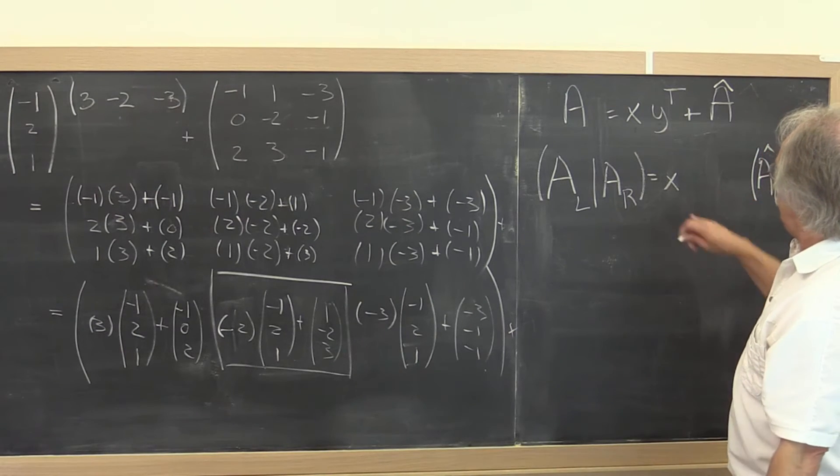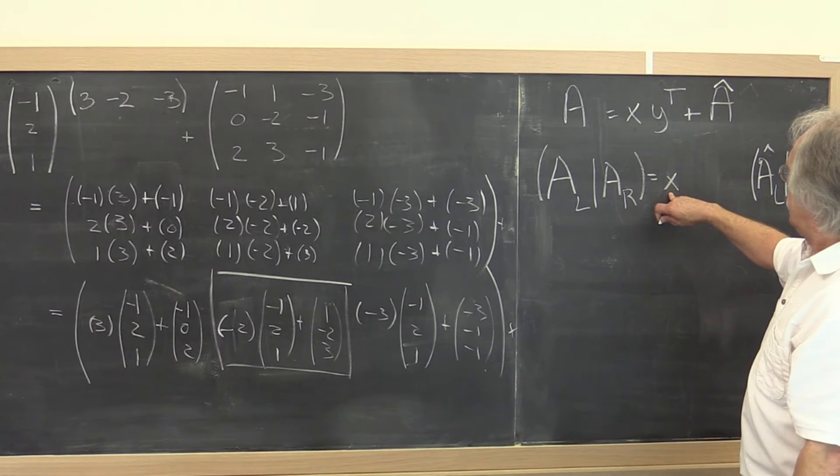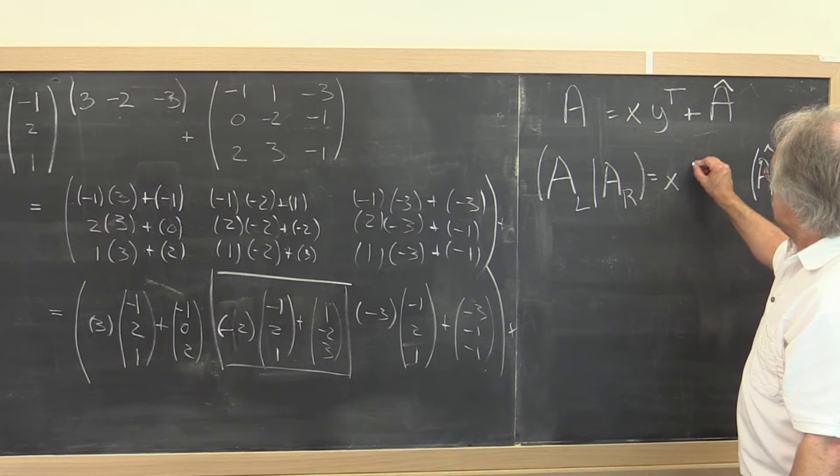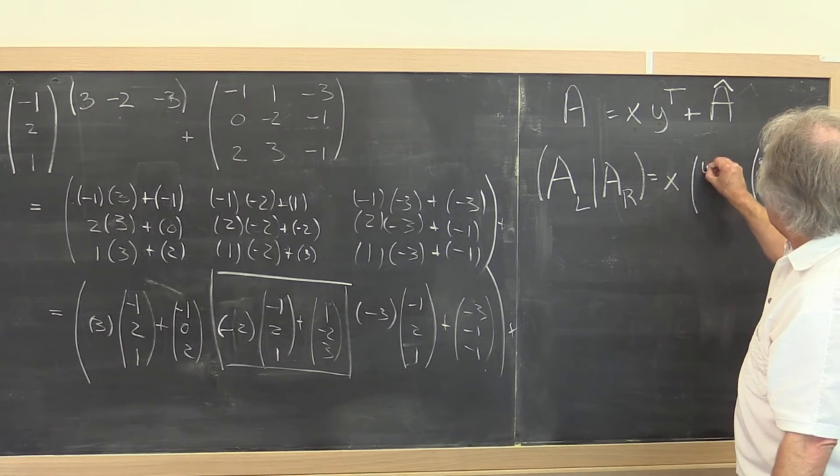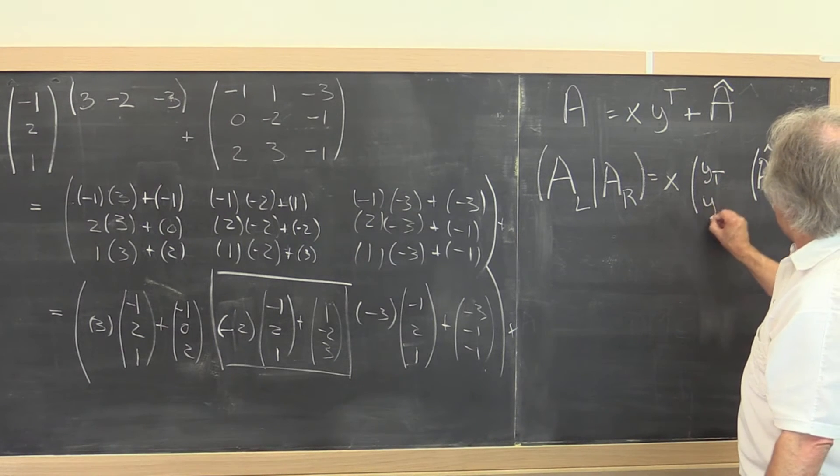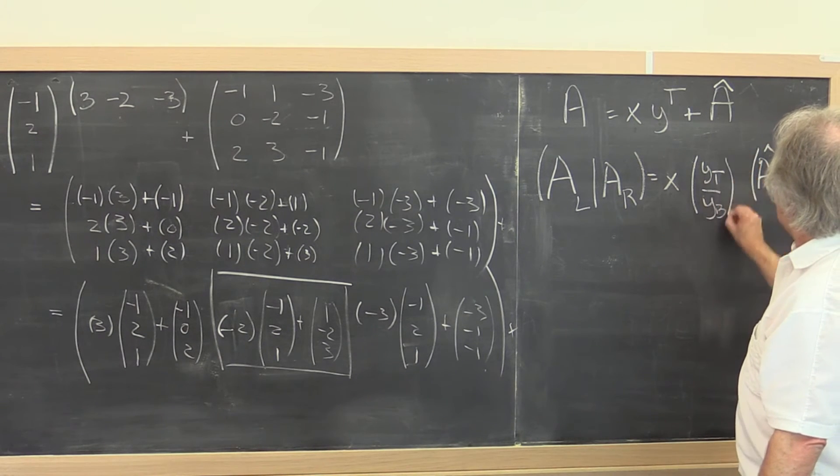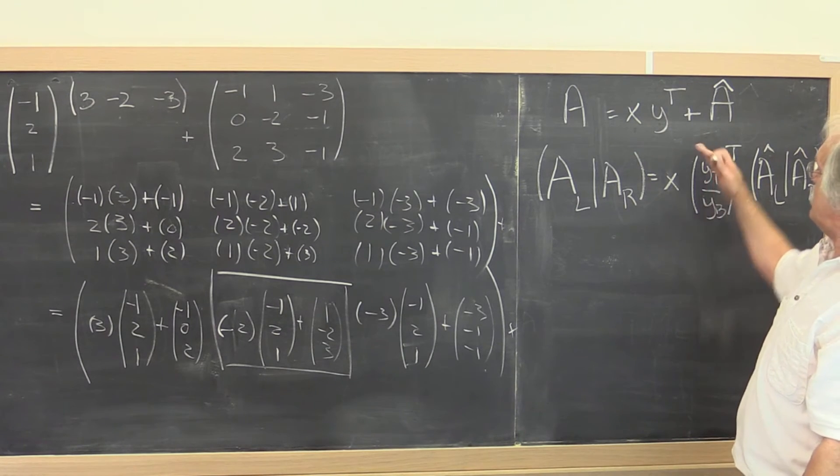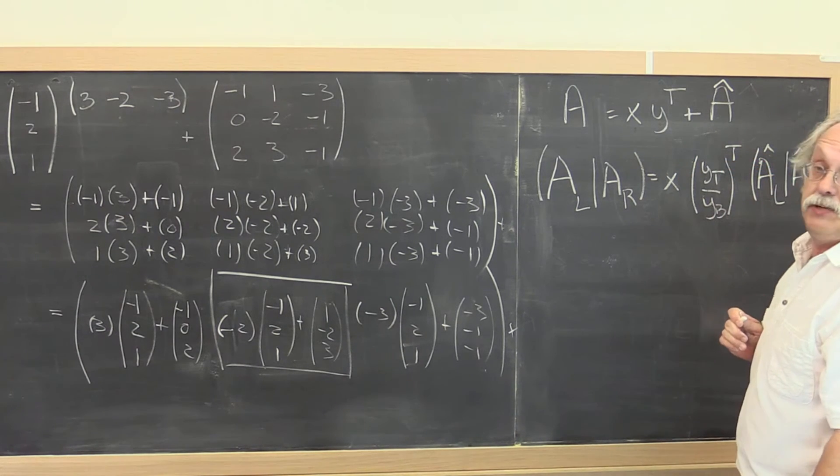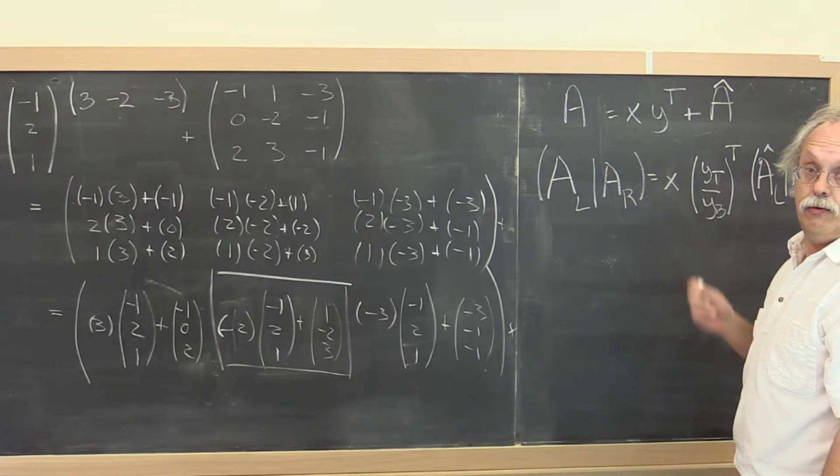And the way you achieve that is to say, let's do x times the vector y split up into a top part and a bottom part. Why? Because then when you transpose that, it ends up being split into a left part and a right part.